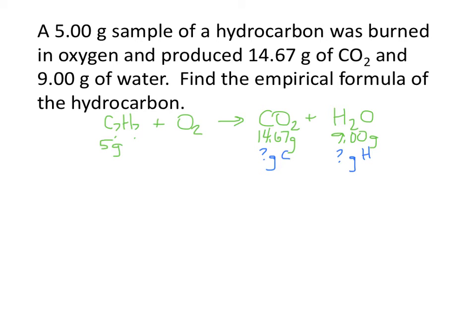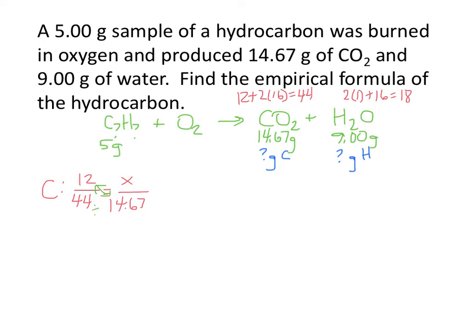To find the grams of carbon using percent composition, we need to know how much CO2 weighs: carbon is 12 plus 2 times 16 for oxygen, which is a total of 44. Carbon weighs 12 out of a total 44 for carbon dioxide — so how much carbon is in 14.67 grams? Cross-multiplying: 12 times 14.67 divided by 44, and you end up with x equal to 4 grams. So 4 grams out of 14.67 grams is carbon.